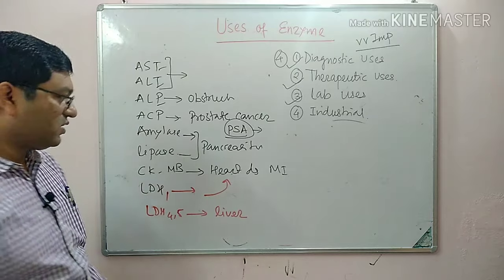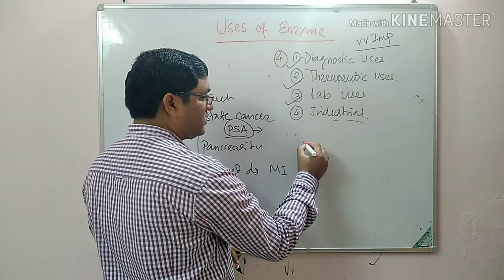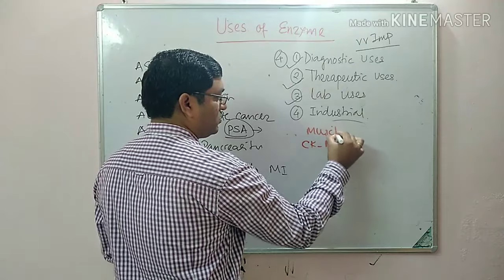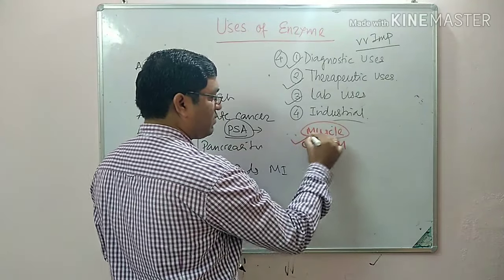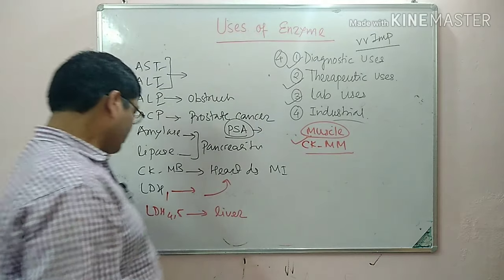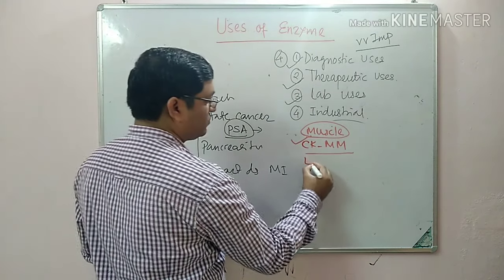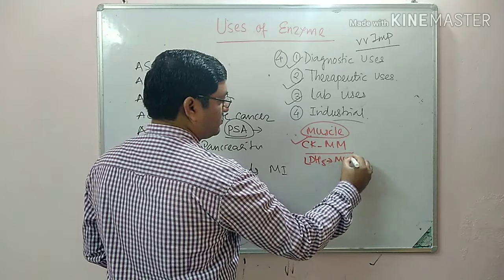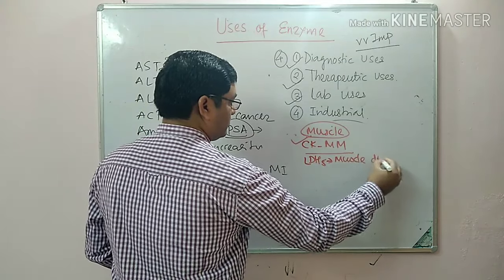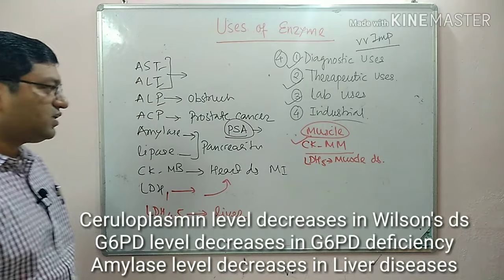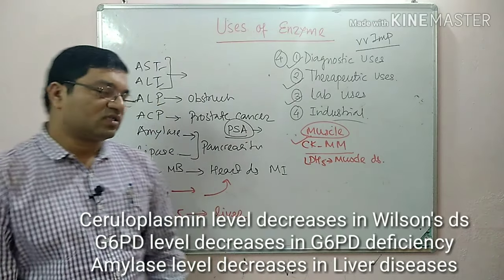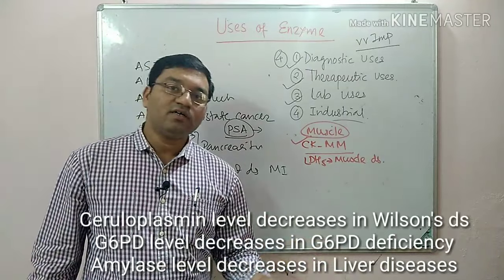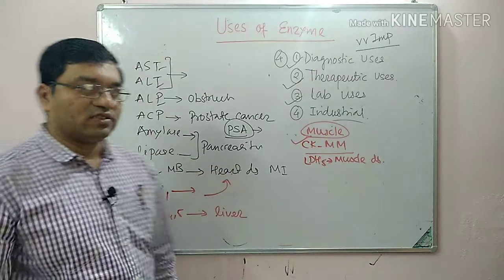In muscle injury and muscle diseases, the CK-MM fraction increases, and LDH5 also increases. These are the different enzymes whose concentrations increase in various diseases, making them useful in the diagnosis of various conditions.